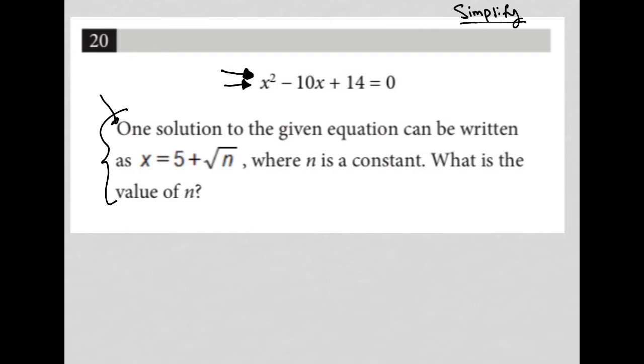The question says one solution to the given equation can be written as x equals 5 plus square root n. Okay, so that's important. Where n is a constant, what is the value of n?